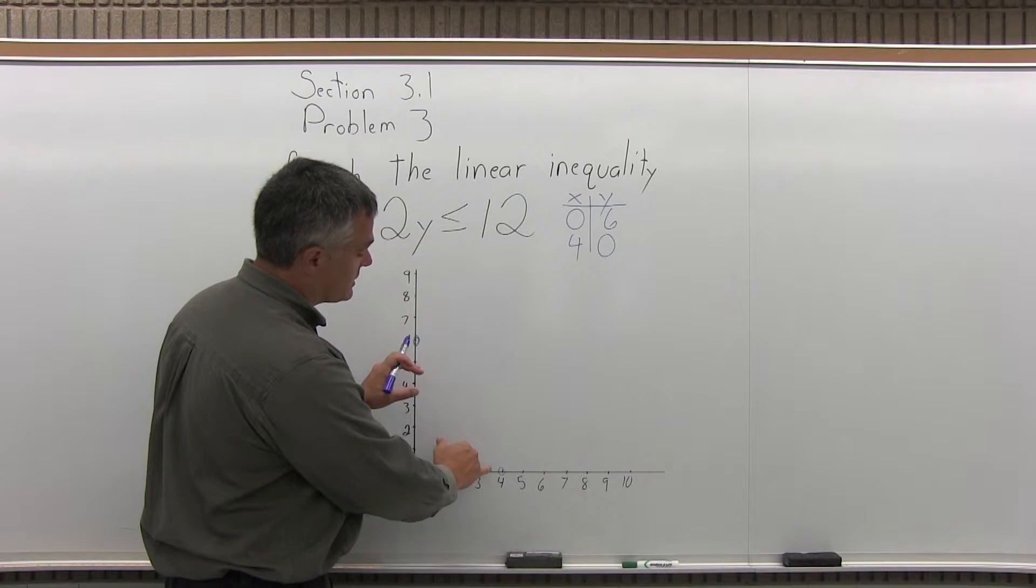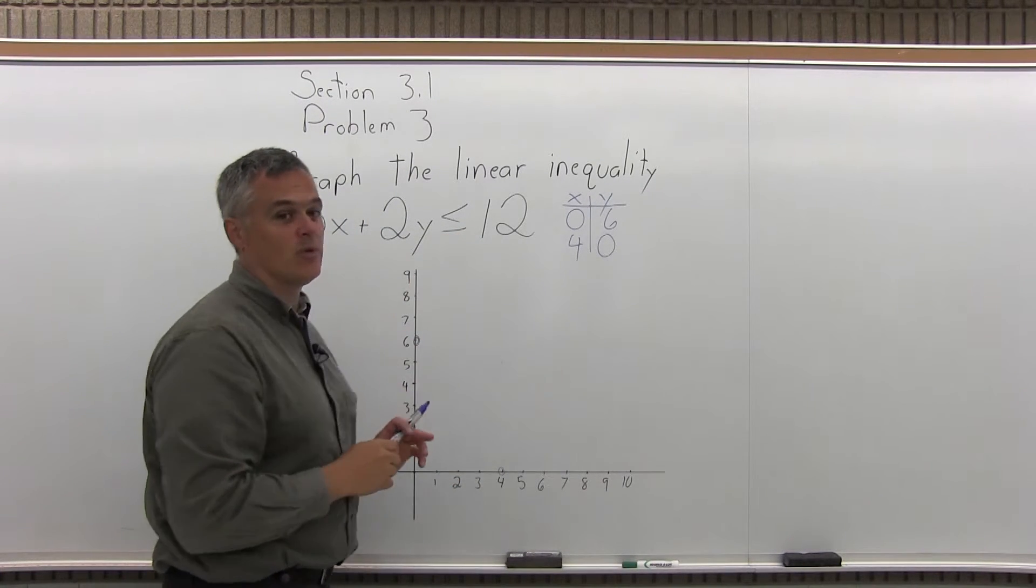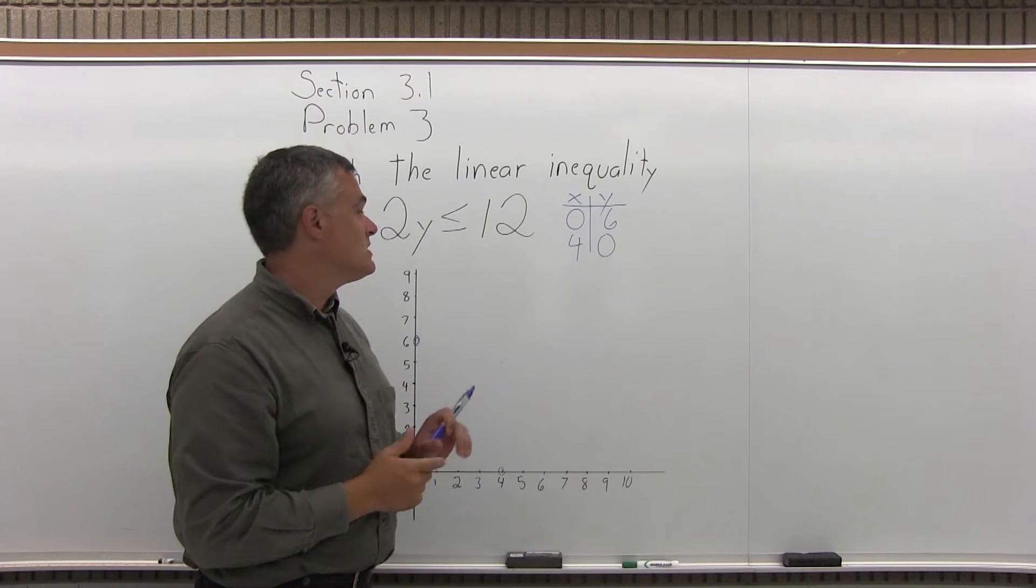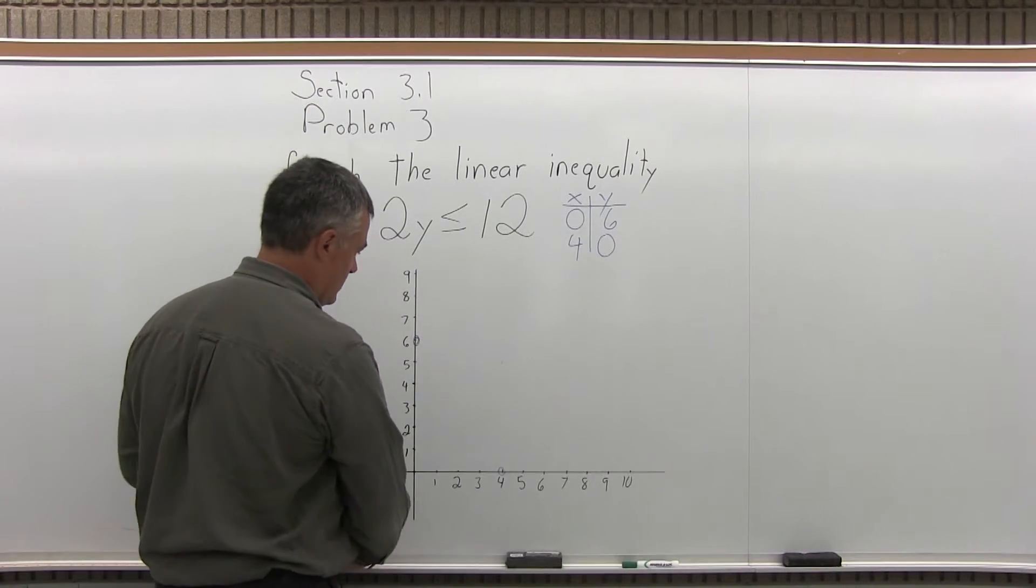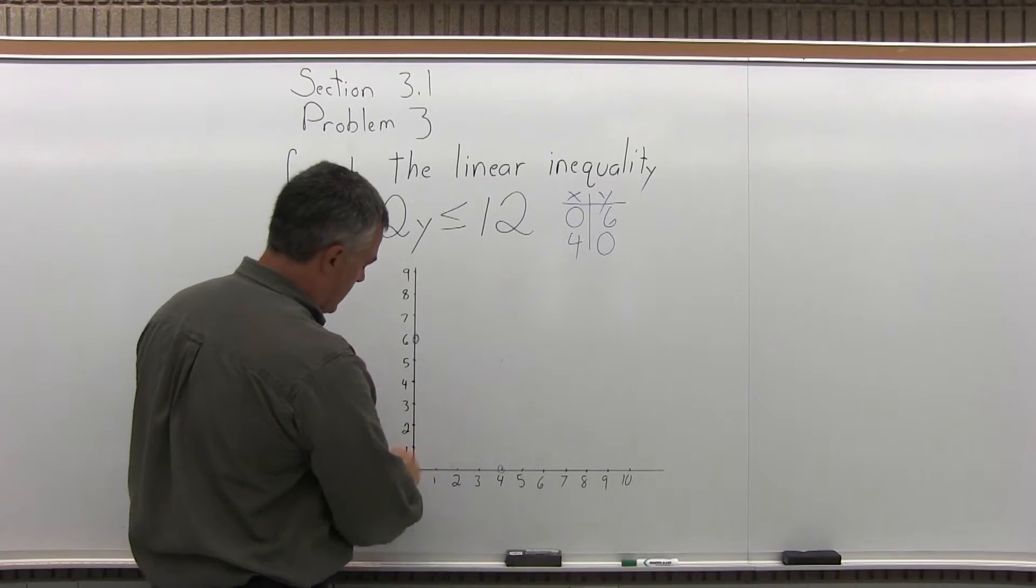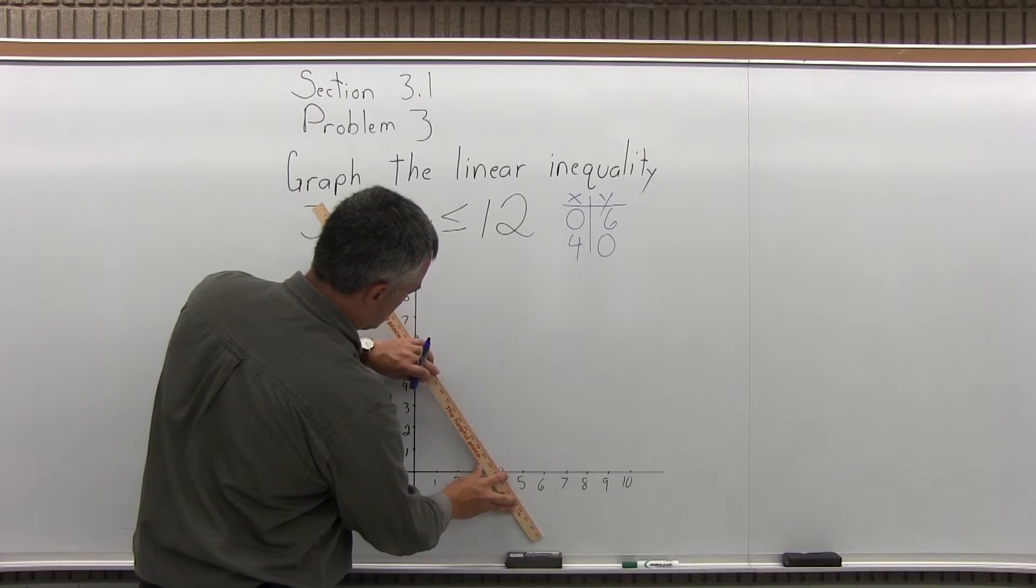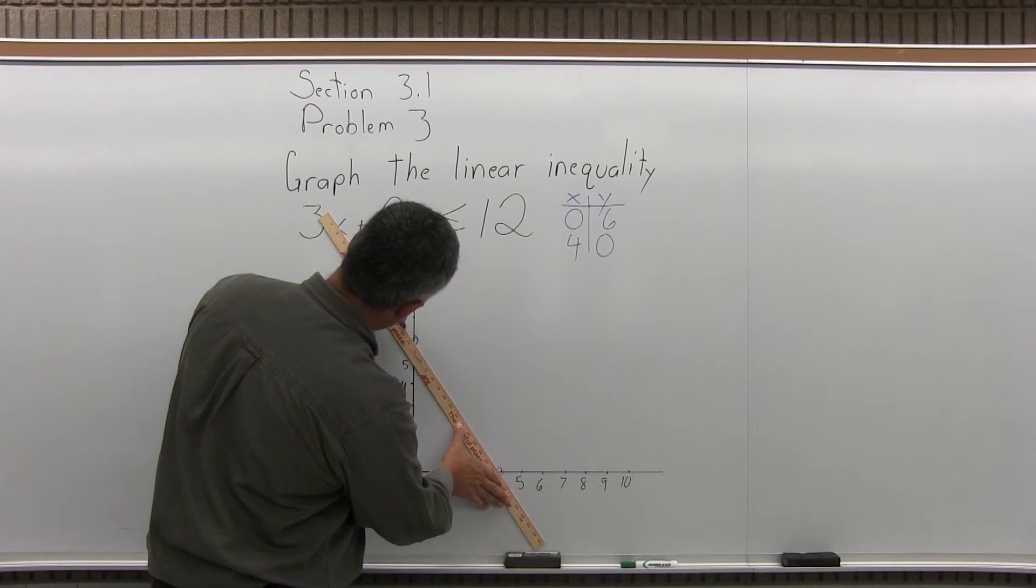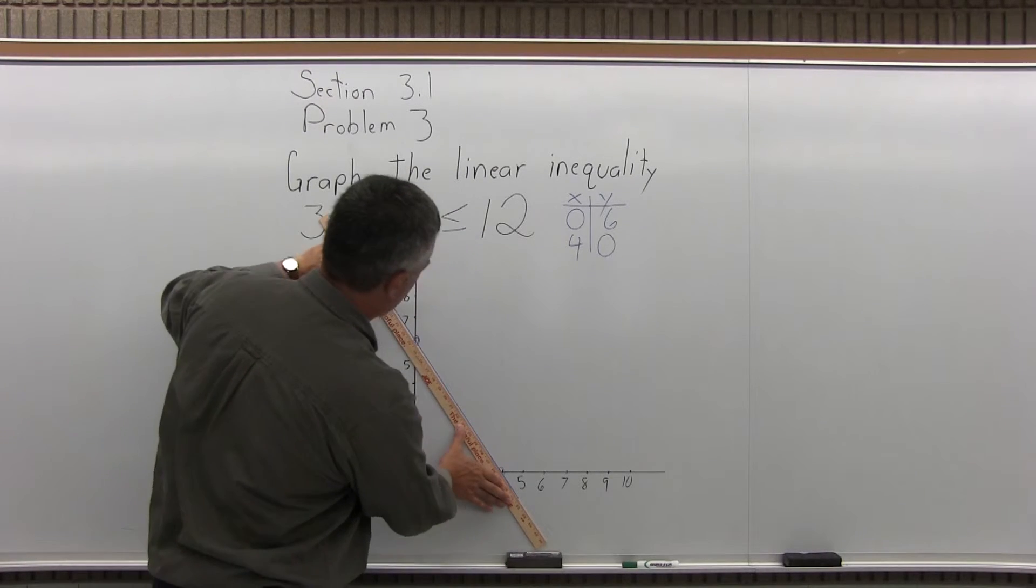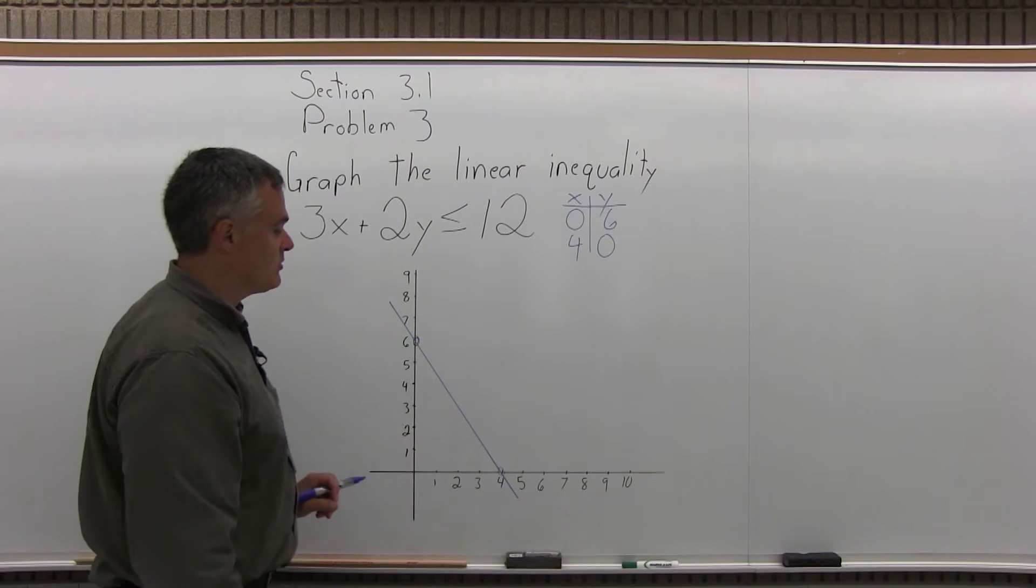Step 3, connect the 2 points from step 2 with a straight line. Use a solid line if you have the or equal to in your linear inequality. Use a dashed line if you do not have the or equal to. We have the or equal to in our linear inequality. So I'm going to use a solid line, connect those two points. I'm going to use a ruler so I get a pretty straight line. I'll put it on my two points. I'll hold it firmly. And there we go. So that's step 3. I've connected the two points from step 2.